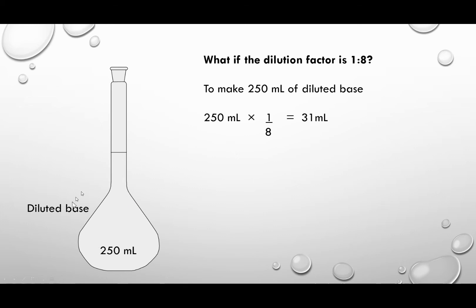So we take our 250 mL that we use in the volumetric flask, divide it by 8, and we work out then that we need 31 mL of concentrated window cleaner, which we then add to this volumetric flask and make up to the mark with deionized water.